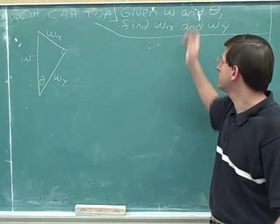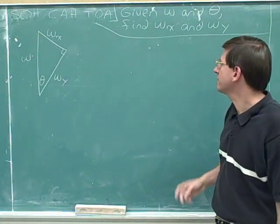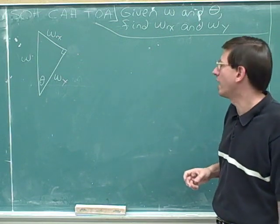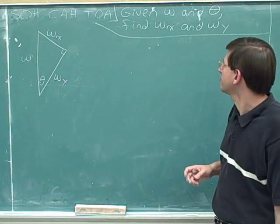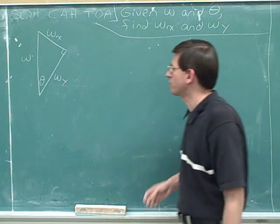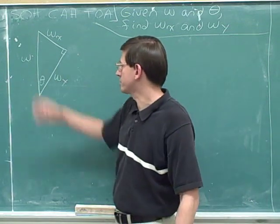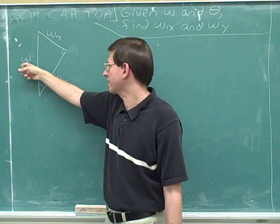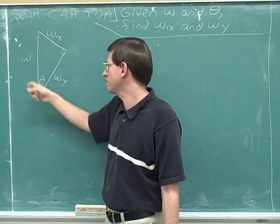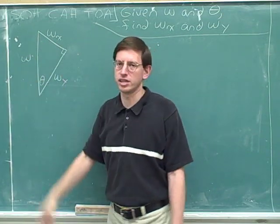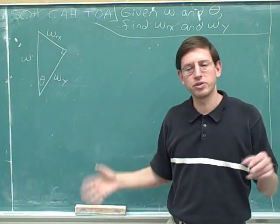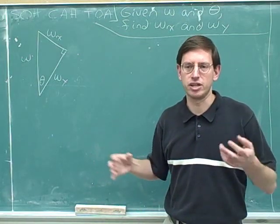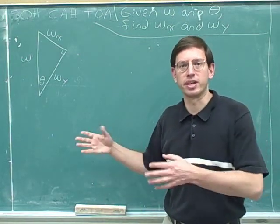Here's another problem. Given w and theta, find w sub x and w sub y for this triangle. Notice that this side is w sub y, this side is w sub x, this side is w — the hypotenuse — here's the right angle, and this angle is theta. If you're having any difficulty, please remember to use the same notation we've been developing in the videos.